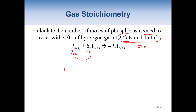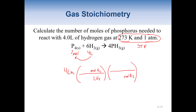We have 4 liters of H2. We're going to convert liters of H2 to moles of H2 because we have to get to that mole ratio to convert to our new substance. From moles of H2 we can convert to moles of our new substance. It wants us to stop at moles of P4. For this conversion, one mole of any gas at standard temperature and pressure is equal to 22.4 liters.